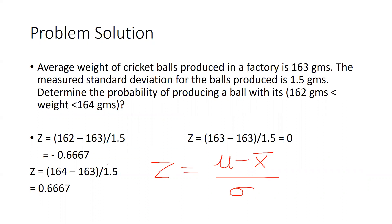In my case, for the first value of 162 grams: z equals 162 minus 163, divided by 1.5. So the value of z is minus 0.6667.